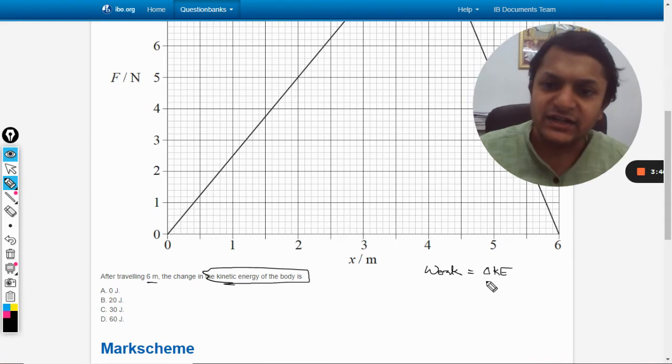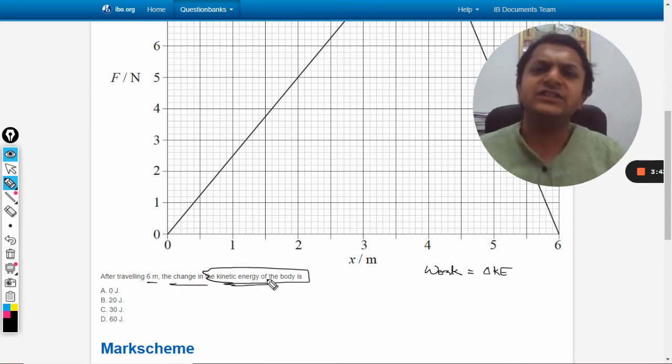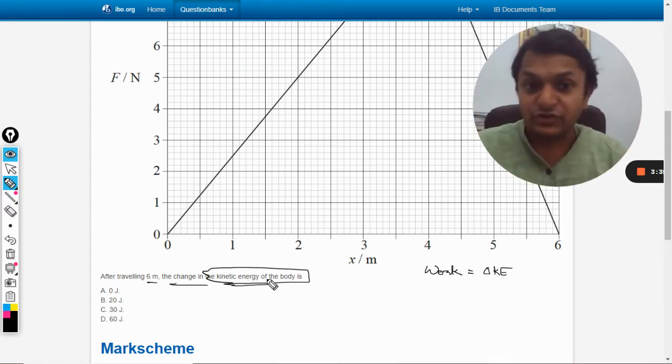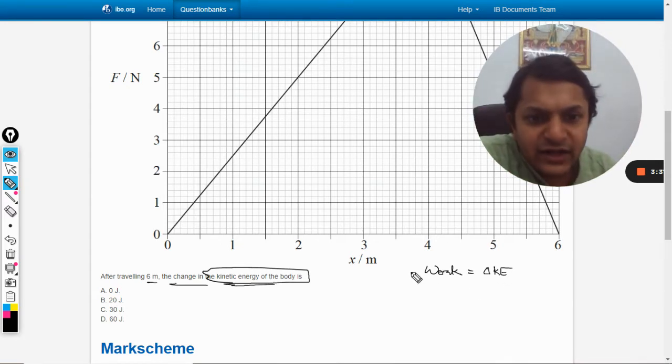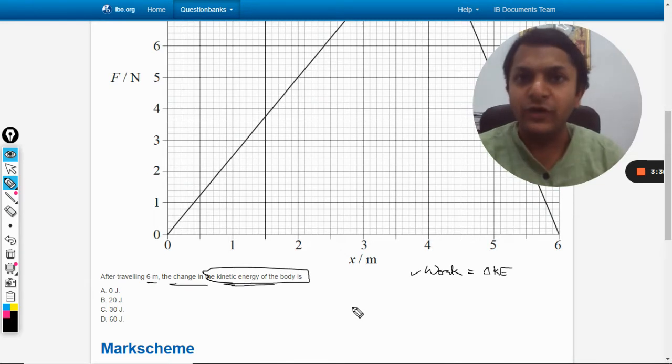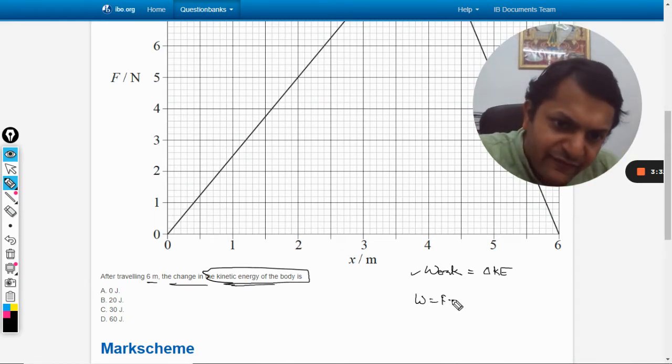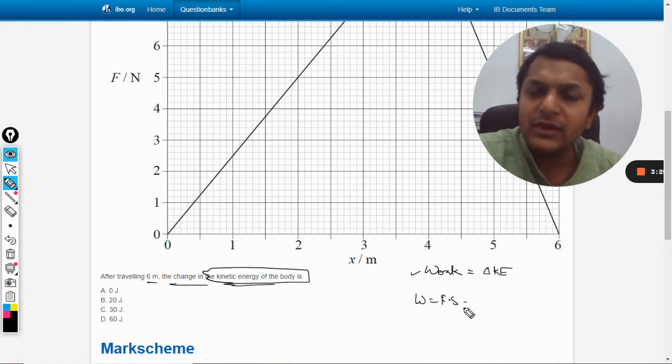So the total work done will be equal to change in kinetic energy. And initially the body is at rest, so we can say that... anyways, the change in the kinetic energy is being asked in the question, so that doesn't matter whether it was at rest or not. So at the end of the day, what we need is we need to find the work. And how to find work? Work is given by F into S.